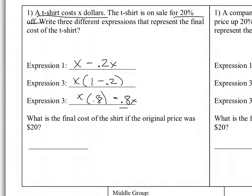So, what is the final cost of the t-shirt? If the shirt's original price was $20, that's 0.8 times x, or 0.8 times 20, which gives us $16.